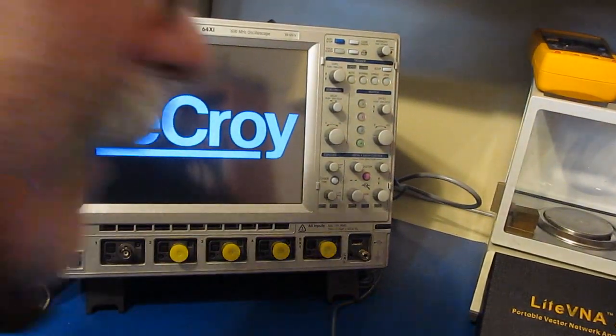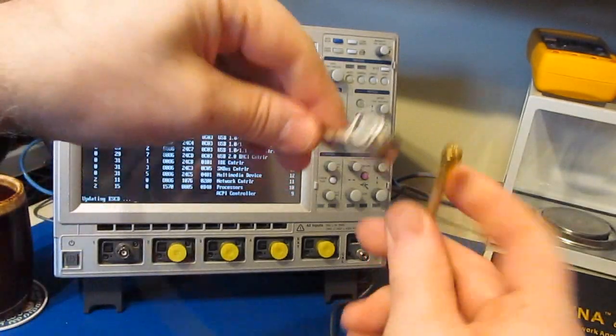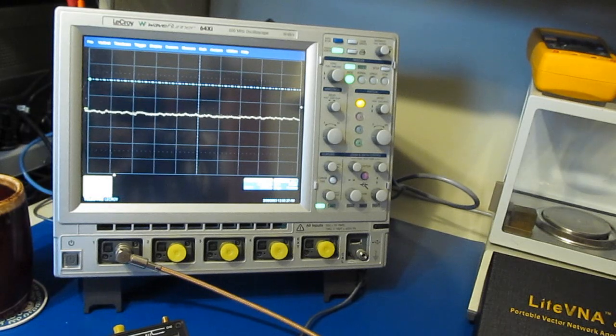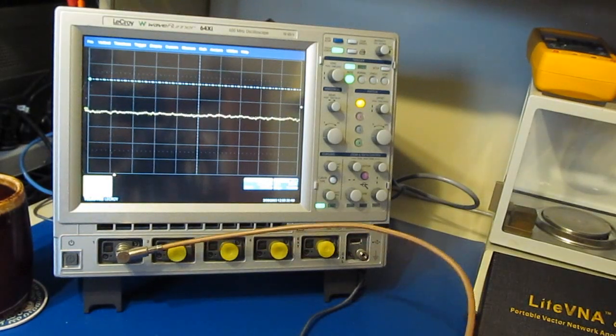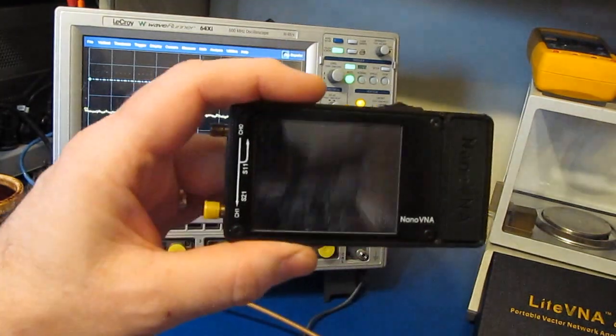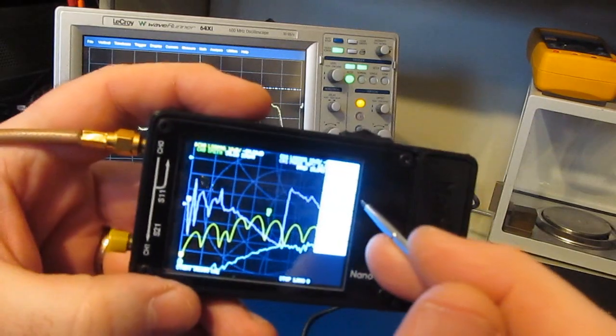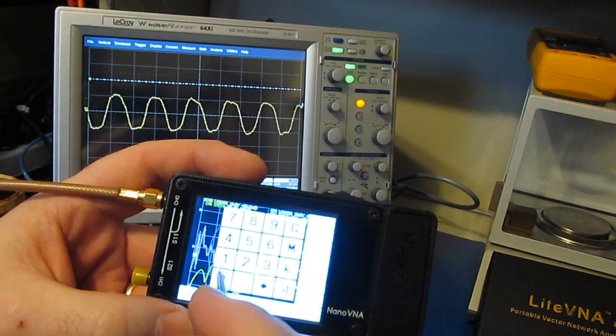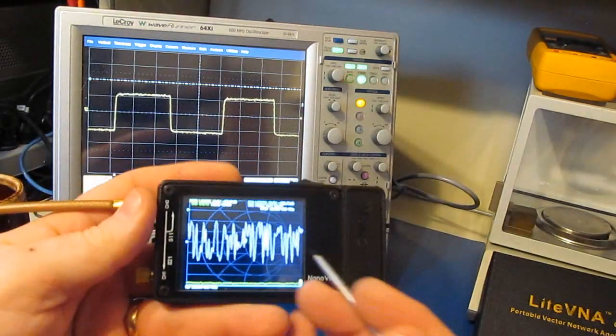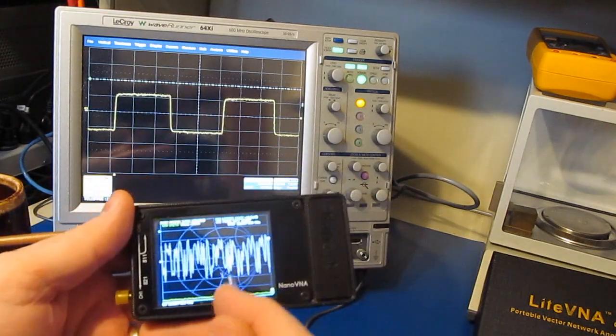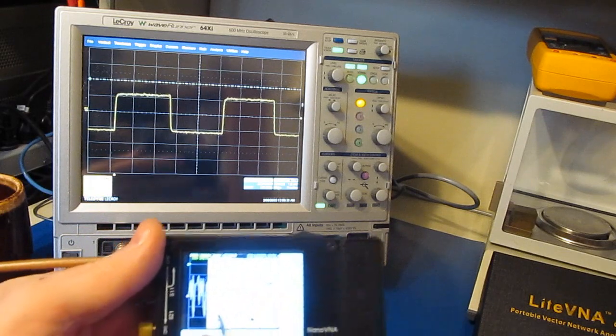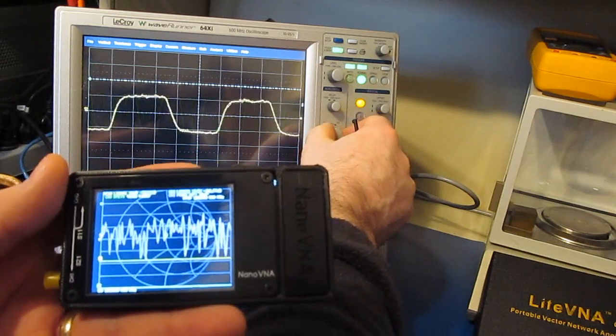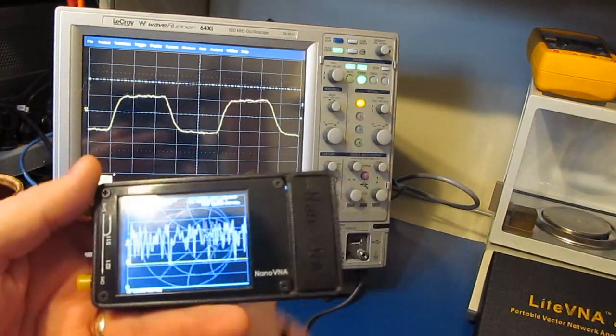We've got our oscilloscope out, connecting a cable to channel one. The scope is set for 50 ohm termination, 100 millivolts per division, DC coupled. Here I have our original nanoVNA. I'll select stimulus, CW frequency, and set this for 10 megahertz. Just like the video mentions, this is obviously a square wave. Let's go to 100 megahertz and again a little rounded but obviously a square wave.